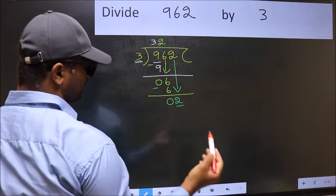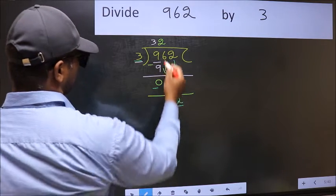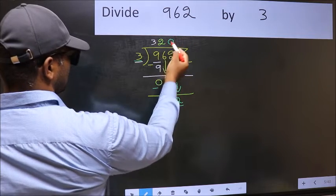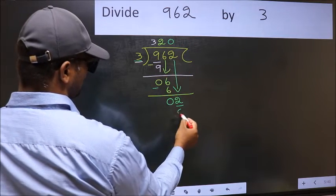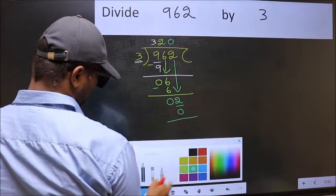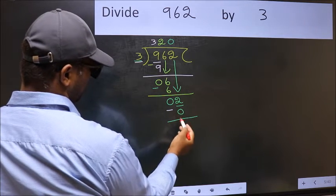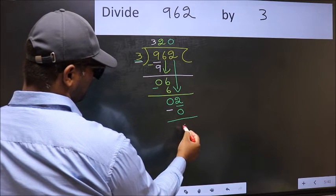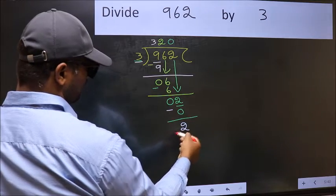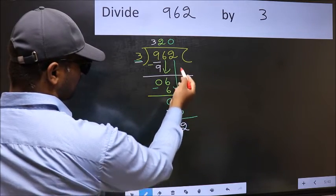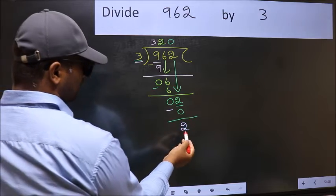Now you should subtract 2 minus 0, 2. Over here we did not bring any number down and 2 is smaller than 3. So now you can put a dot and take 0.